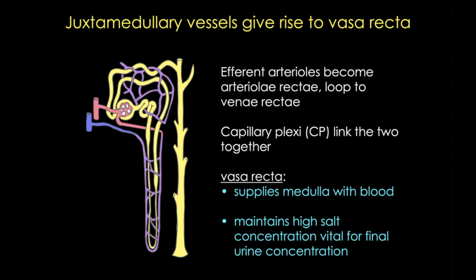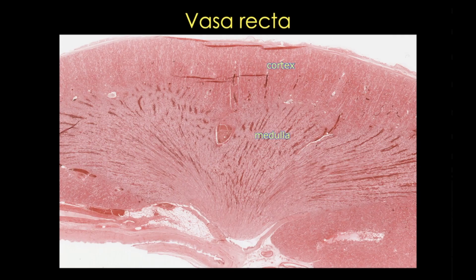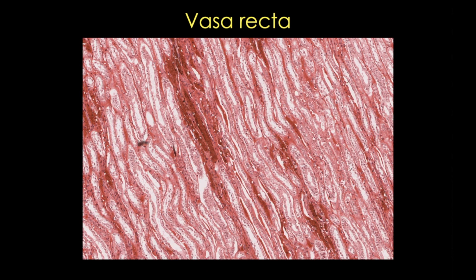The importance of the vasa recta is two-fold: it supplies the long medulla with blood, and it maintains the high salt concentration, which is vital for final urine concentration. There are great YouTube videos describing this process, known as counter-current exchange. This image shows a section through an entire kidney where you can fully appreciate the long blood capillaries of the vasa recta, and a closer view shows the vessels within the medulla beside the different tubules.